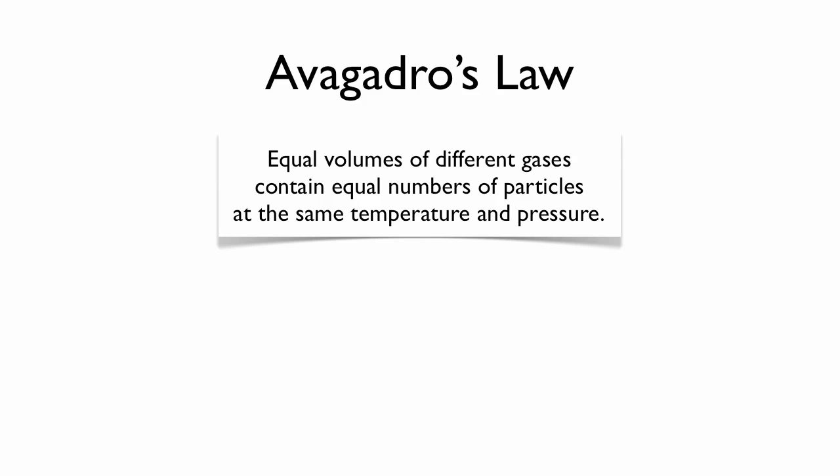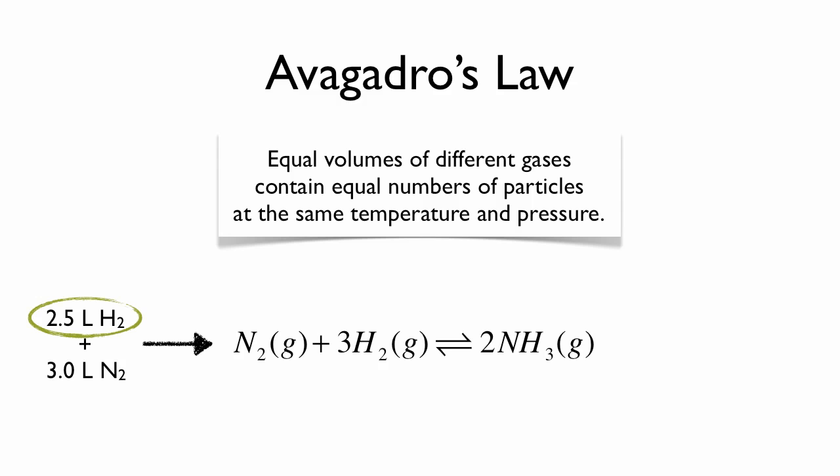So how can this help us when we do chemistry problems? Well, because of Avogadro's law, we can treat volume ratios the same way we treat molar ratios. So here we have 2.5 liters of hydrogen and 3 liters of nitrogen going into the Haber process. If you think about it for just a second, you'll realize that hydrogen gas is the limiting reagent in this situation. And because there's 2 moles of ammonia for every 3 moles of hydrogen, that means we'll get 1.7 liters of ammonia.